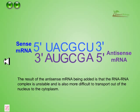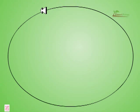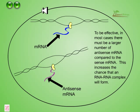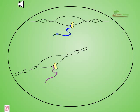The result is that the antisense mRNA binds to the sense mRNA, forming an RNA-RNA complex that is unstable and also more difficult to transport from the nucleus to the cytoplasm. To be effective, in most cases there must be a larger number of antisense mRNA molecules compared to sense mRNA, which increases the chance that an RNA-RNA complex will form.